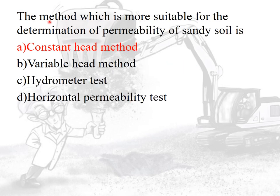The method more suitable for the determination of permeability of sandy soil or coarse-grained soil is the constant head method. For the determination of permeability of clay soil, the answer is the variable head method. The hydrometer test is used for particle size grain analysis.